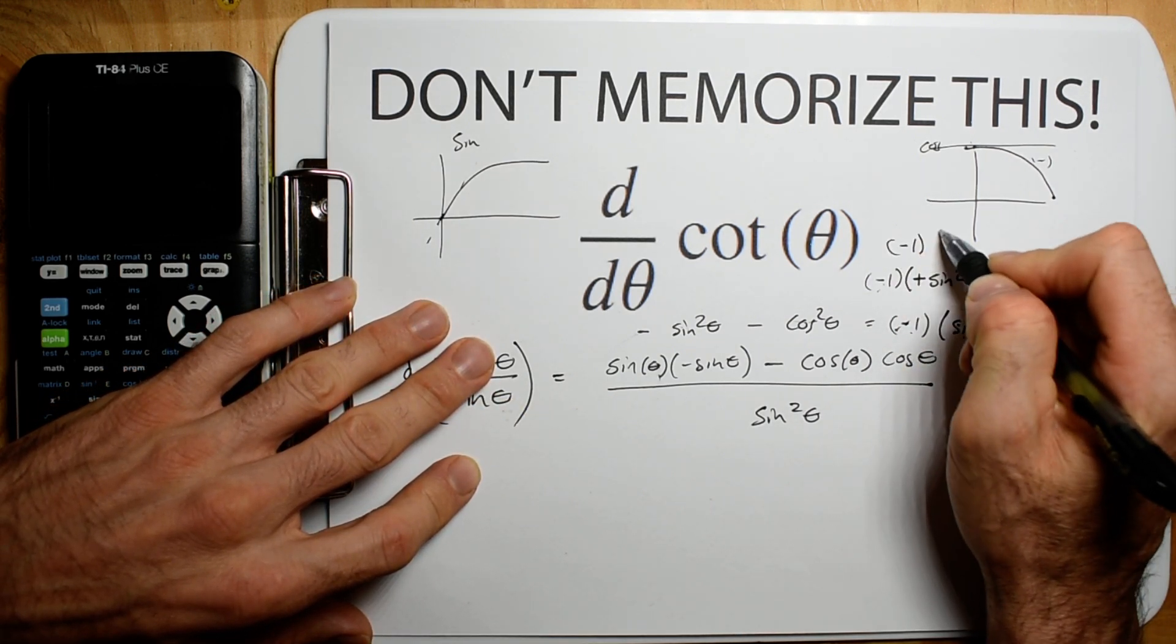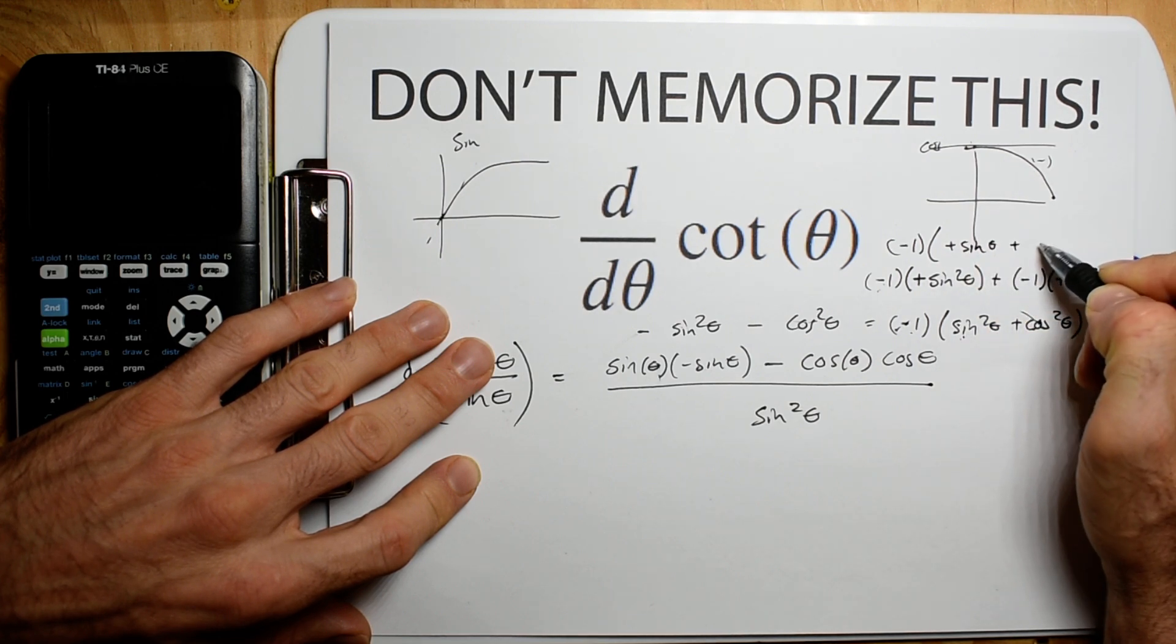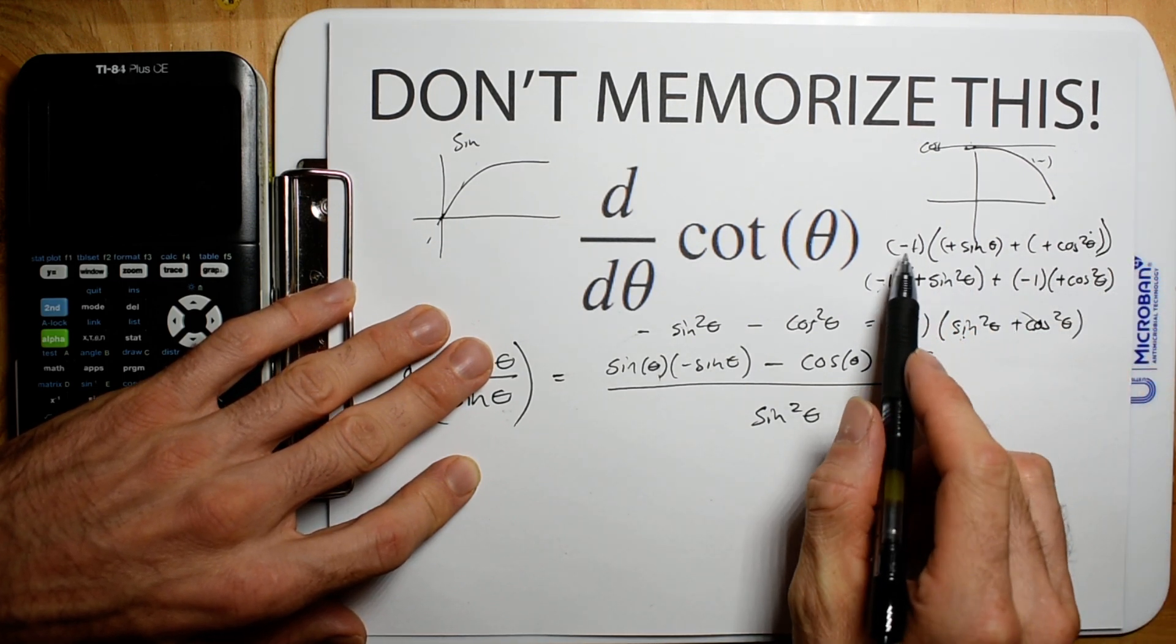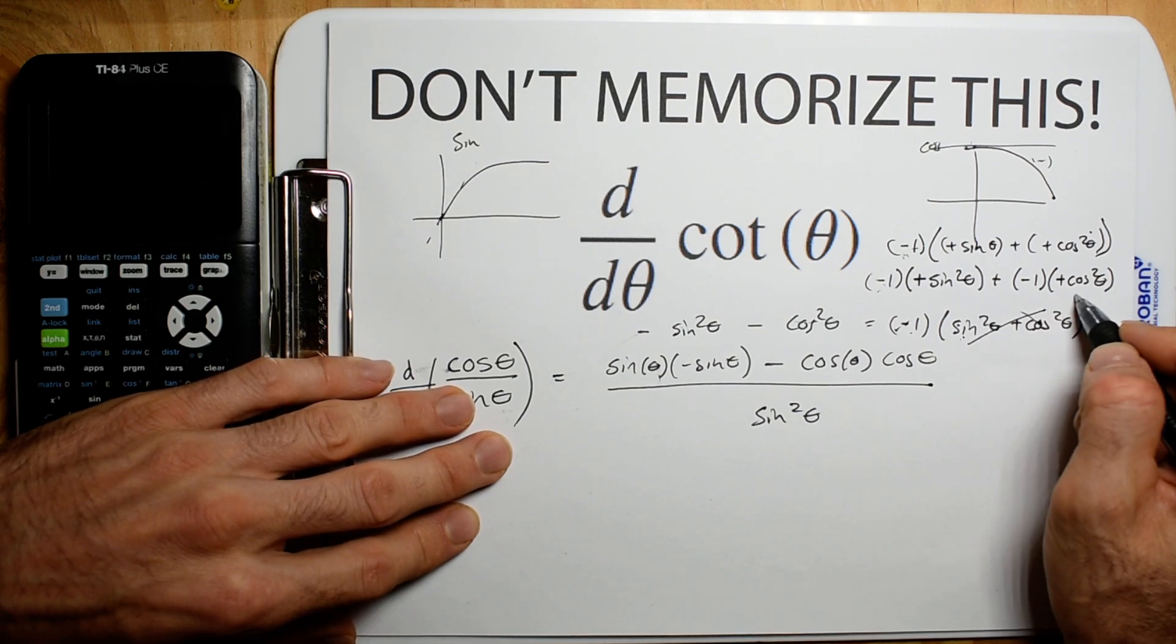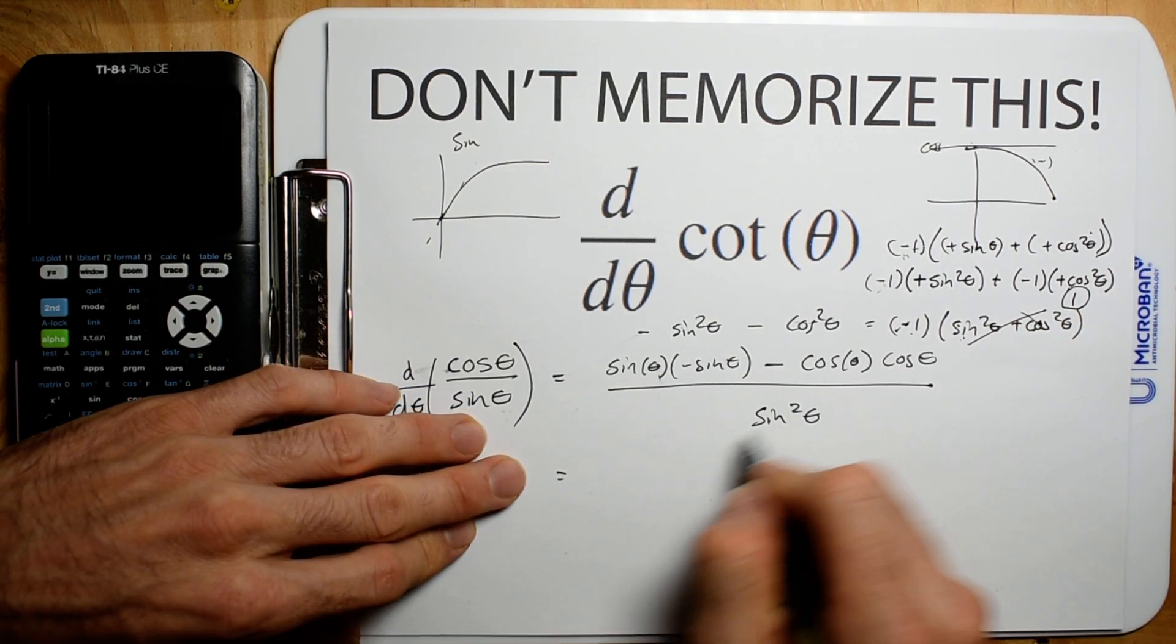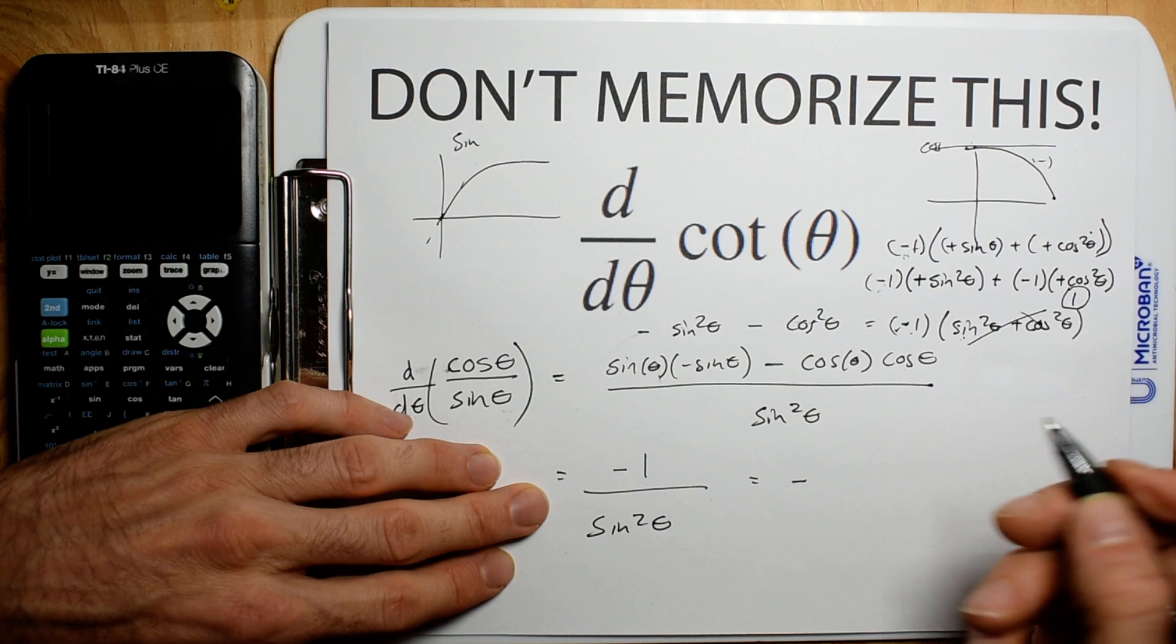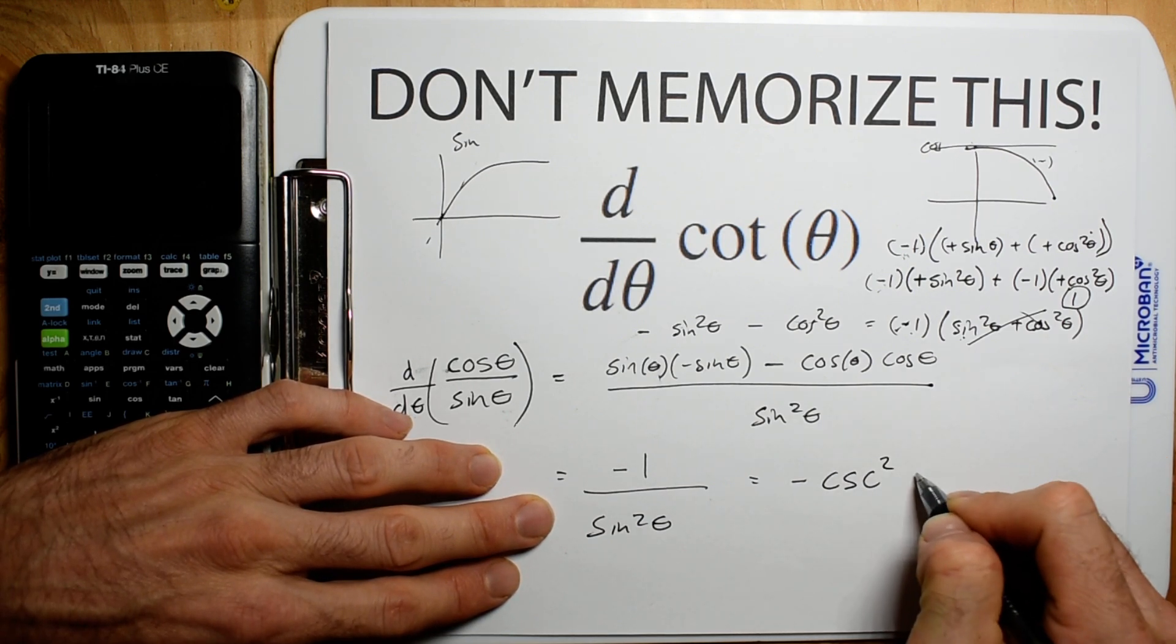You can totally see that now you can factor out the sines and cosine. You can factor out that negative 1. That's all I'm saying. So now you see that this is your trigonometric identity of 1 and you have a negative. So the answer to this is negative 1 divided by sine squared theta. And sure, obviously this is going to be negative cosecant squared theta.